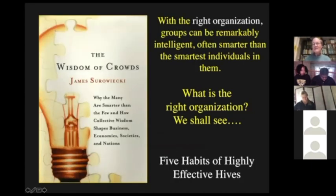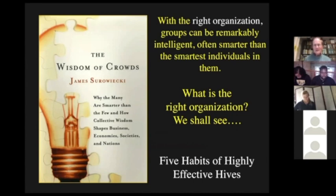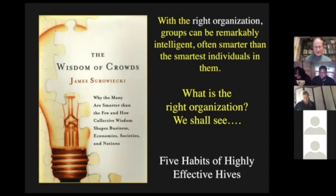I'm not the first person to make this claim. About 10 to 15 years ago, James Surowiecki wrote the influential book called The Wisdom of Crowds. His main point was that with the right organization — and I emphasize right organization — groups can be remarkably intelligent, often smarter than the smartest individuals in them. What he was not so clear on is what the right organization is. He put out a lot of good ideas, but we've learned from the bees some very clear elements whereby a group can function well. I call these the five habits of highly effective hives, and we'll come back to those at the end of this talk.